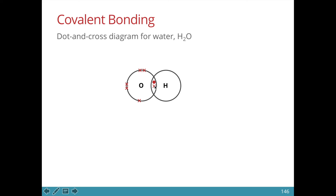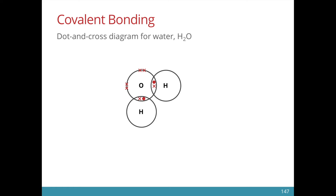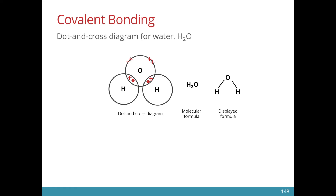Oxygen now has seven electrons — it still needs one more. We can get one more hydrogen to come in and bond to oxygen. Now we see that oxygen has a complete outer shell of eight electrons. So overall, we see that a water molecule consists of two hydrogen atoms and one oxygen atom. That's why its molecular formula is H₂O.